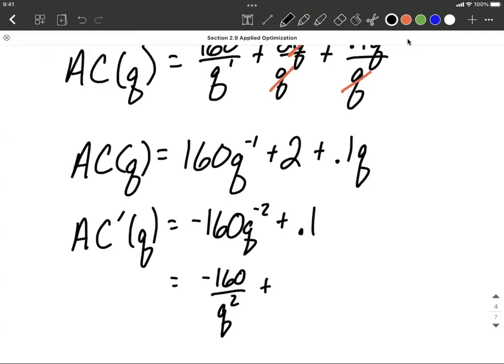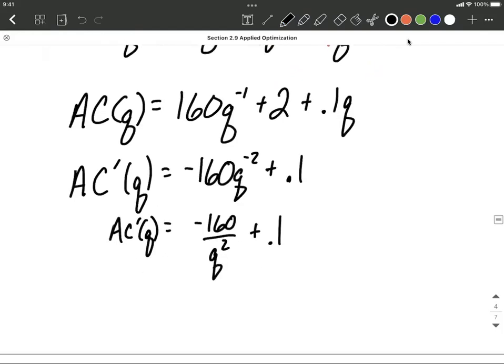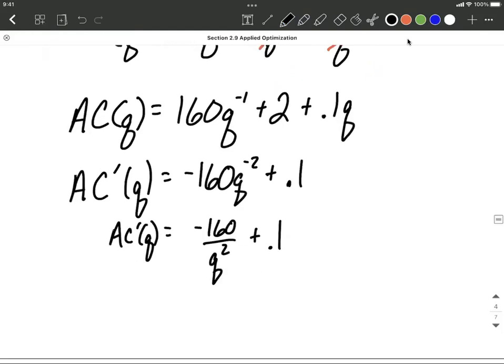When we're thinking about critical numbers or critical values, those occur whenever the derivative is either equal to 0 or undefined. We could get a critical number by thinking, well, if I put in a 0 for Q, we're dividing by 0 and it would be undefined, but that's not going to help us out in this problem. So instead, what I'm going to suggest is, let's go ahead and set it equal to 0 and work on solving down.